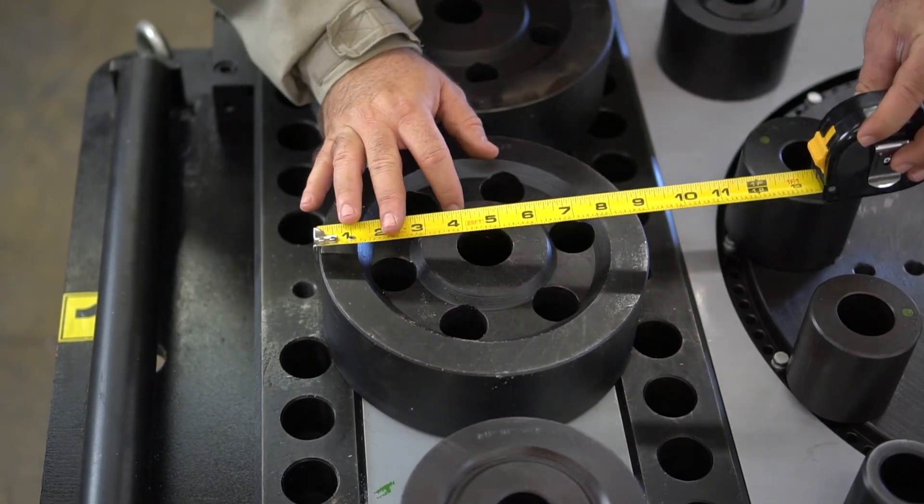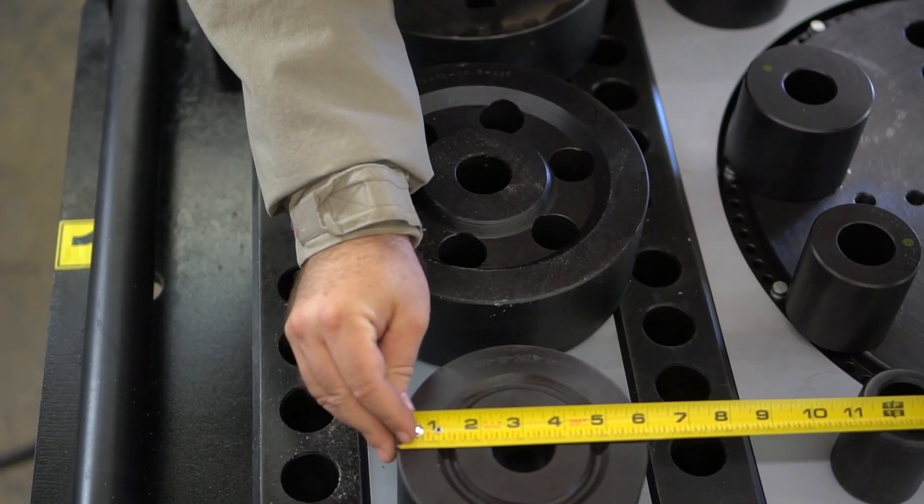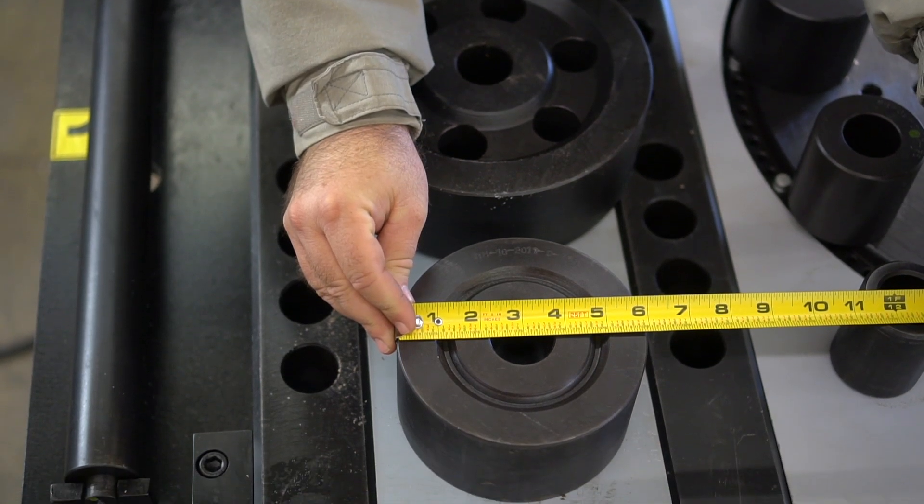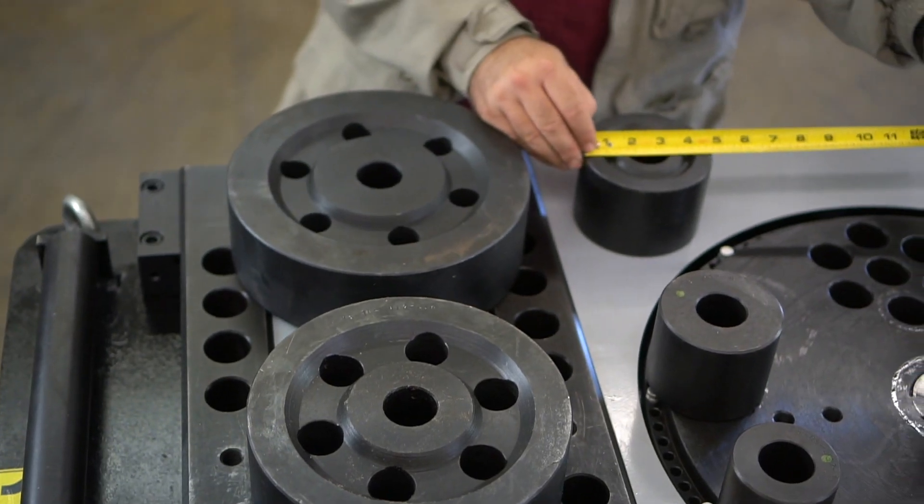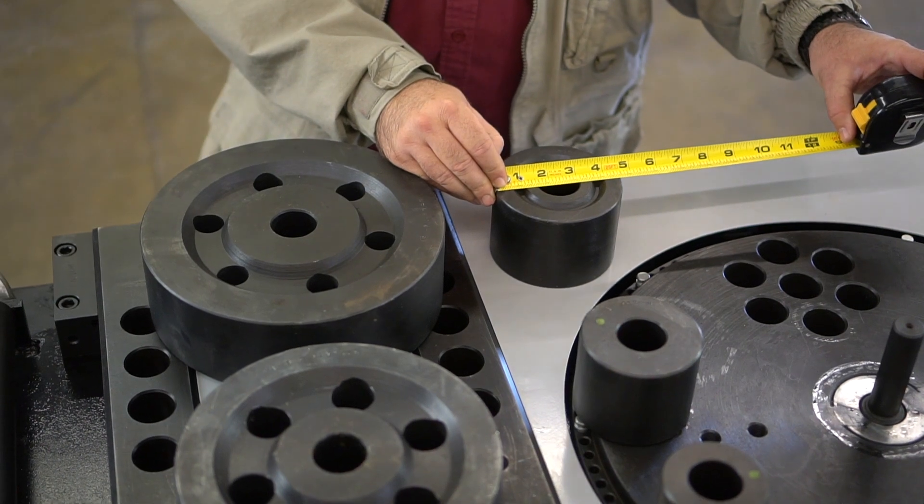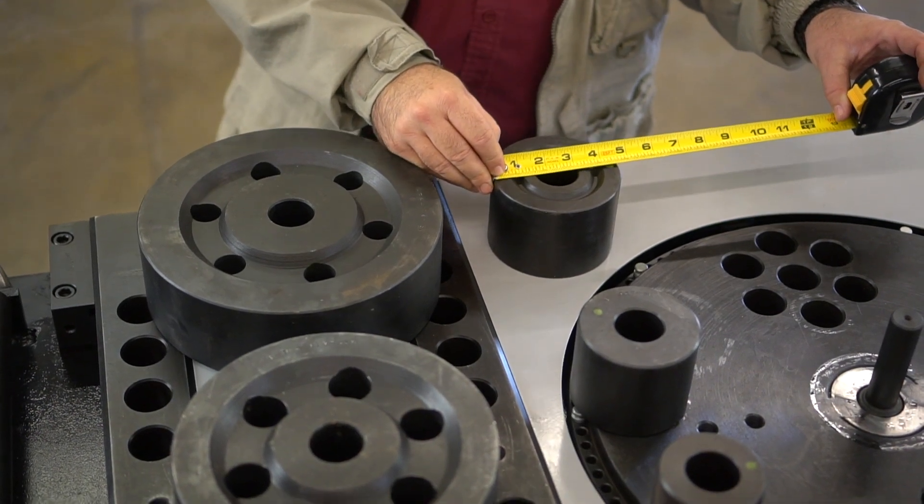This is a 6 inch or 150 millimeter roller, which can bend number 8 bar. And this is a four and a half inch or 111 millimeter roller, which is used for number six bar.